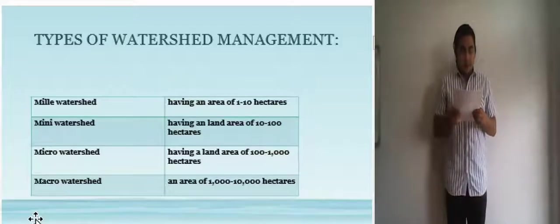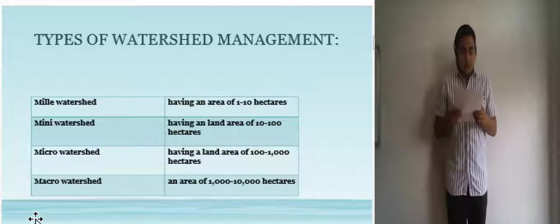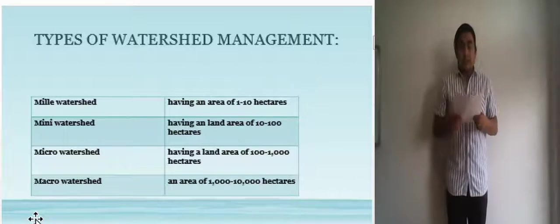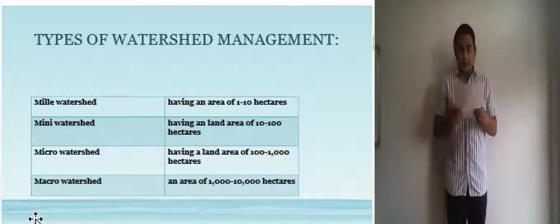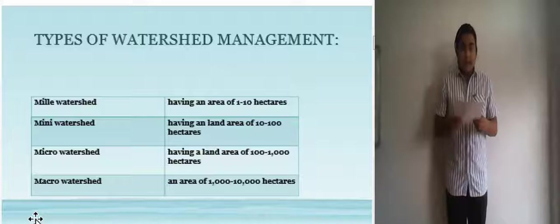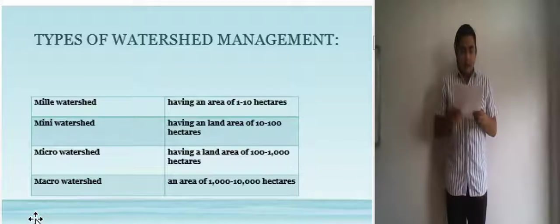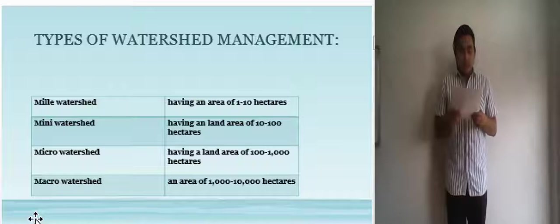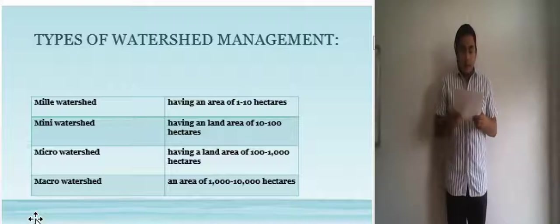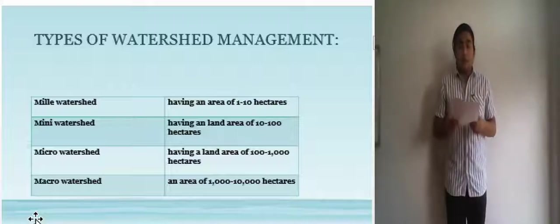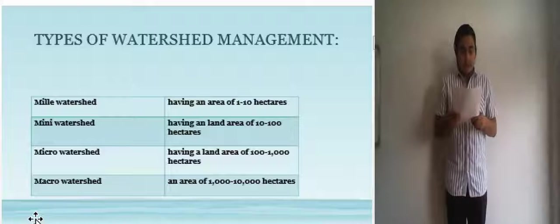Now there are four different types of watershed management. Watershed is classified depending upon the size, shape and land use pattern. The first type is the micro watershed, having a land area of 1 to 10 hectares. The third one is the mini watershed, having a land area of 100 to 1,000 hectares. And the last one is the macro watershed, having a land area of 1,000 to 10,000 hectares.